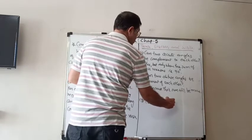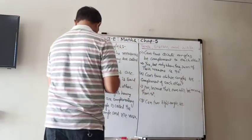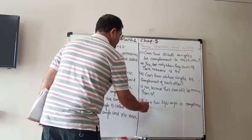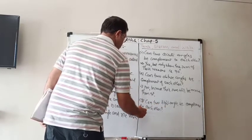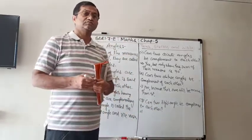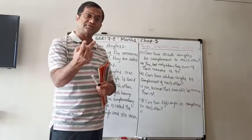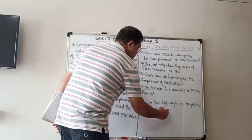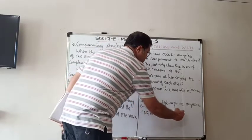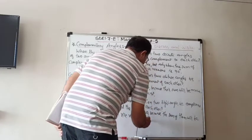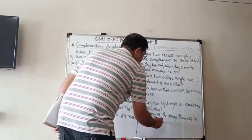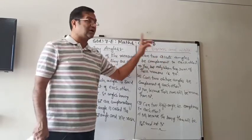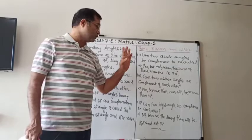Third question: can two right angles be complementary to each other? This is very clear because a right angle itself is 90 degrees, and if you take two right angles, the sum will be 180 degrees, not 90 degrees. So the answer is no. In summary, two angles can be complementary only when they are both acute angles, but not obtuse angles, and not even two right angles can be complementary.